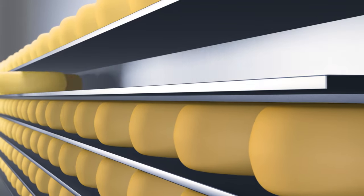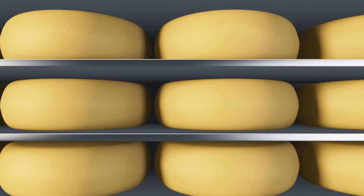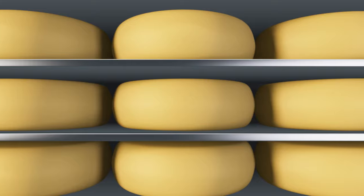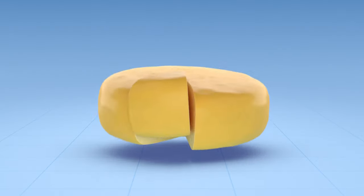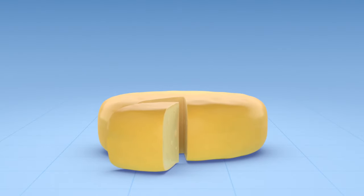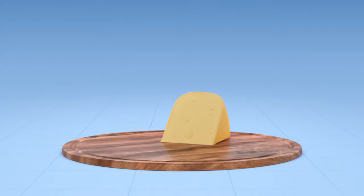Now we've reached the final stage of the process: ripening. This gives each cheese its unique flavor, texture, and aroma. Gouda, for instance, first ripens for 10 days at 10 to 12 degrees Celsius, then at 12 to 15 degrees Celsius, for up to 3 years.